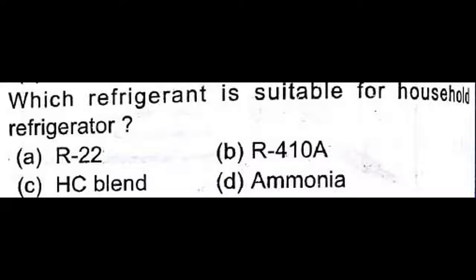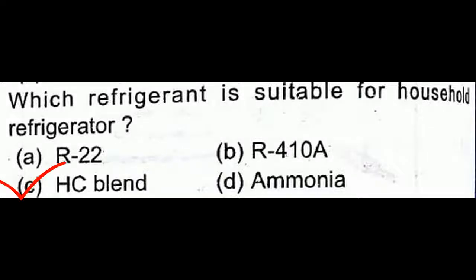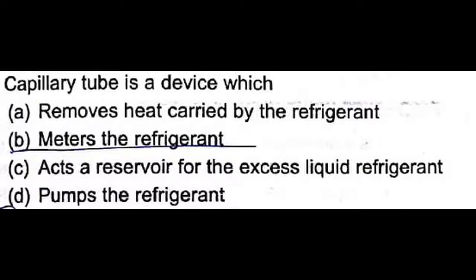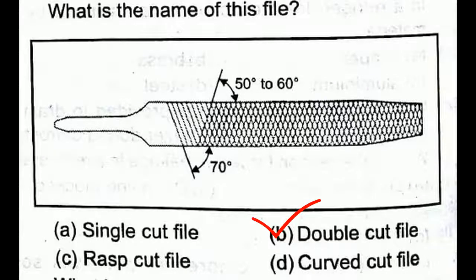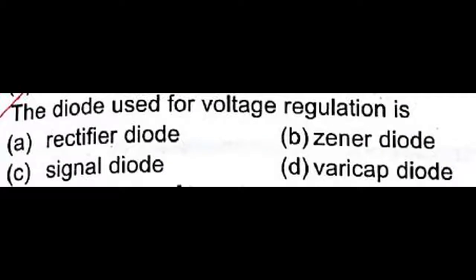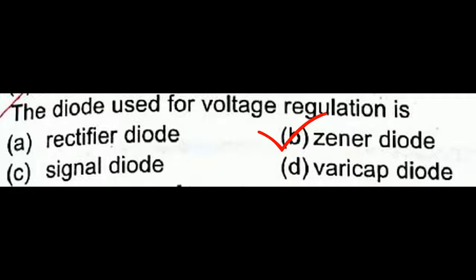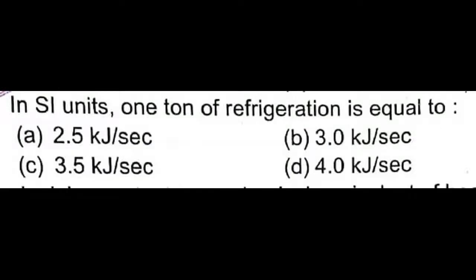The refrigerant suitable for a household refrigerator is HC blend — option C is correct. A capillary tube is a device that meters the refrigerant — option B is correct. The file shown with two cuts at 50-60 degrees and 70 degrees is a double cut file. The diode used for voltage regulation is a Zener diode — option B is correct.